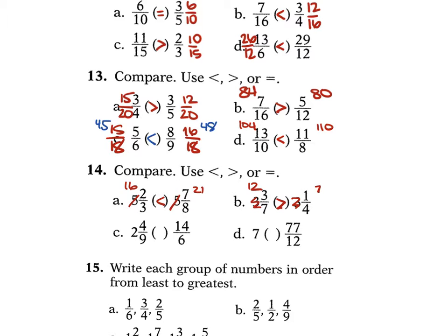For C, 2 and 4 ninths vs. 14 over 6. Converting 14 over 6 gives 2 and 2 sixths. Cross multiplying: 2 times 9 is 18, 6 times 4 is 24 — so 2 and 4 ninths is greater. For D, comparing 7 vs. 77 over 12: 77 over 12 is 6 and something (since 12 times 6 is 72), so 7 expressed as 84 over 12 is greater than 77 over 12.